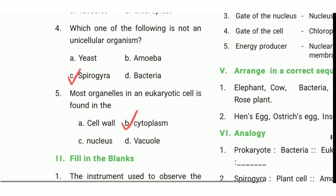Fifth one: most organelles in a eukaryotic cell are found in the dash. The answer is B, cytoplasm.